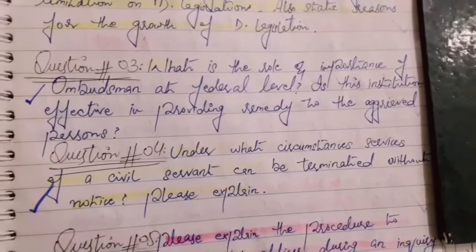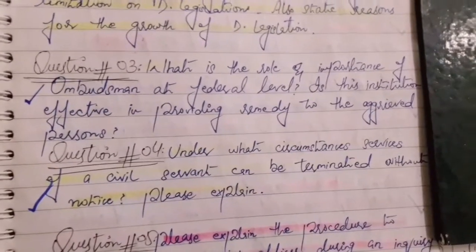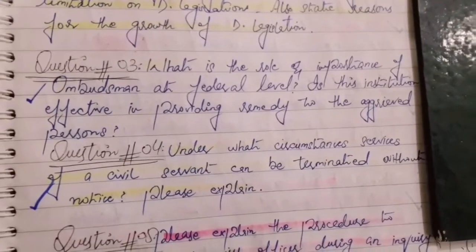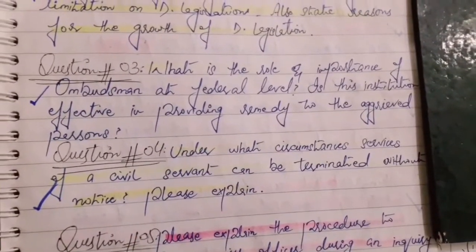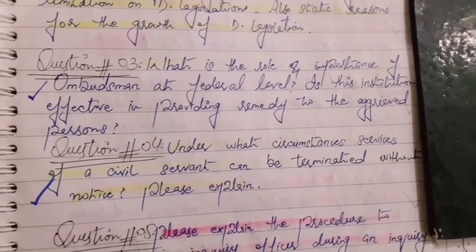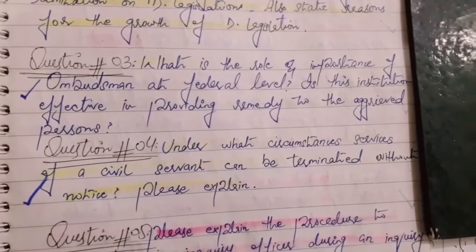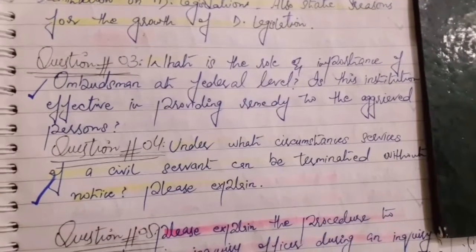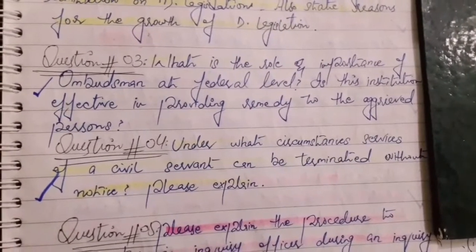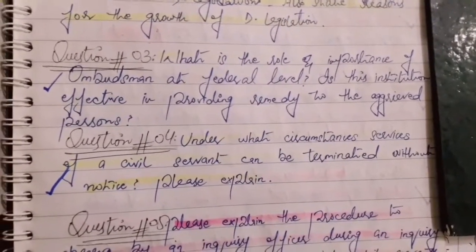Question number three: What is the role and importance of the Ombudsman at the federal level? Is this institution effective in providing remedy to aggrieved persons?